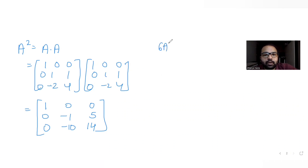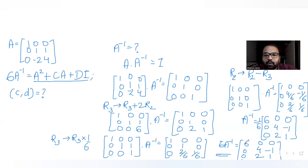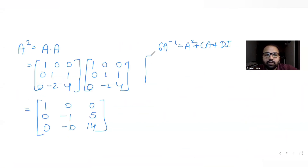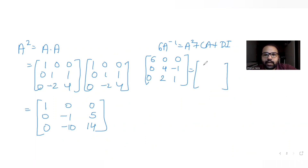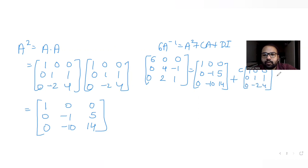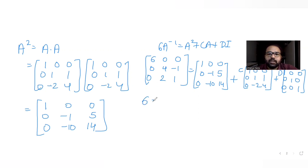Now, 6 times A inverse equals A squared plus C times A plus D times I. Substituting: [[6,0,0],[0,4,-1],[0,2,1]] equals [[1,0,0],[0,-1,5],[0,-10,14]] plus C times [[1,0,0],[0,1,1],[0,-2,4]] plus D times [[1,0,0],[0,1,0],[0,0,1]]. Comparing the (1,1) entry: 6 = 1 + C + D, so C + D = 5. Comparing the (2,2) entry: 4 = -1 + C + D, which again gives C + D = 5, consistent.